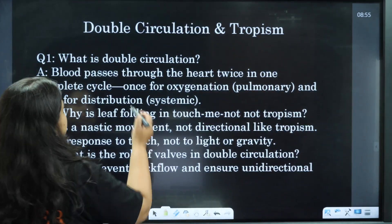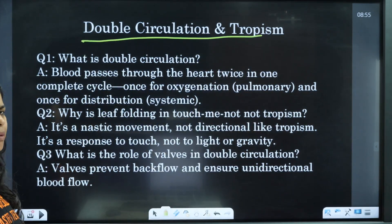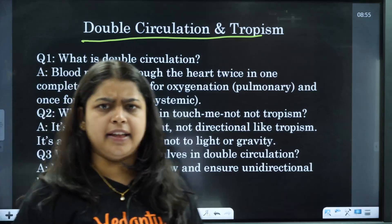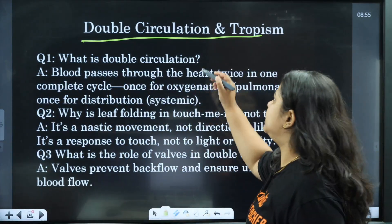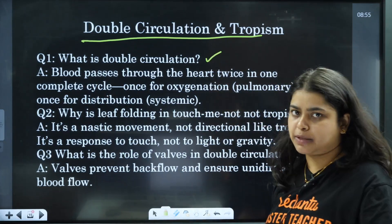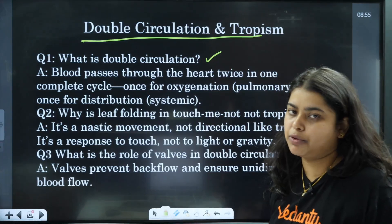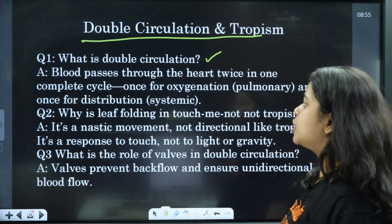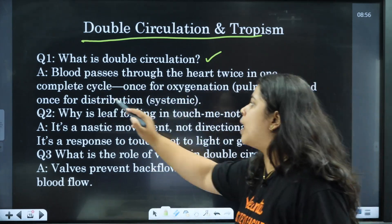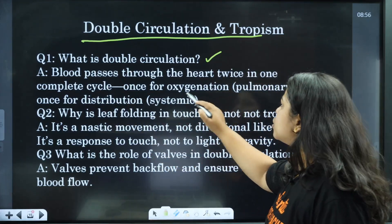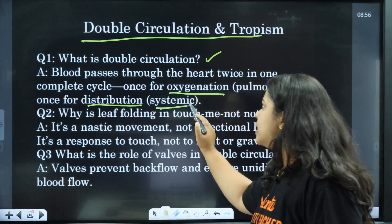Today's topics: double circulation and tropism. What is double circulation? It will be repeated a lot of times in your exams — a lot of questions in mid-terminal. Blood passes through the heart twice in one complete cycle.